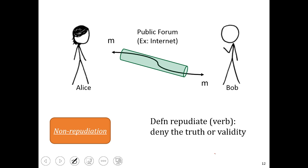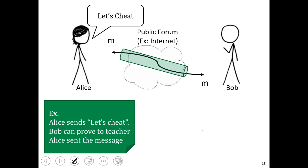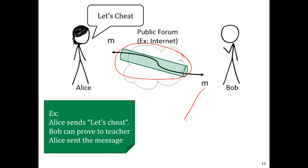Finally, the fourth security goal is non-repudiation. The word repudiate means to deny the truth or validity of something. Non-repudiation is best described with an example: suppose Alice sends a message to Bob that says 'let's cheat,' and this message was protected by the cryptonium pipe. Bob can verify this message was sent by Alice and that it hasn't been modified. What non-repudiation means is that Bob should be able to take this message to a teacher and prove that it was sent by Alice. This is different from authenticity — authenticity is about whether Bob can tell the message is from Alice, which is different from whether Bob can prove it to a third party like a teacher.